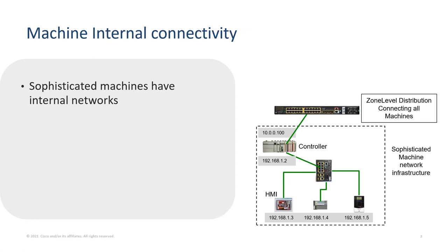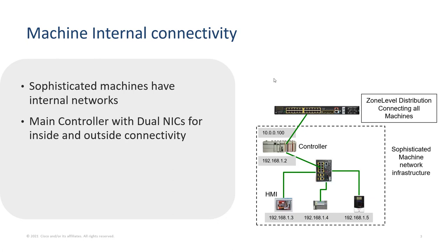Before we jump into Layer 2 NAT and how it works, I want to level set on an example using this machine — not a real machine, I made it up. What's important is that sophisticated machines are made up of multiple components that are IP addressable. Individual components have their own IP addresses, such as 192.168.1.3 and 192.168.1.4. Often there is a main controller with dual NICs — an outside interface for communicating with the rest of the world and an inside interface for communicating with the components of the machine.